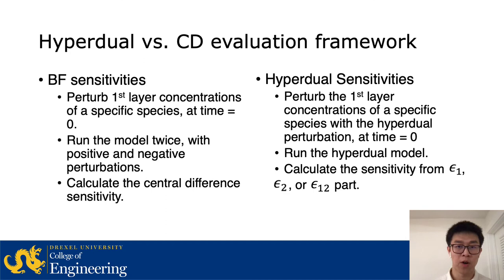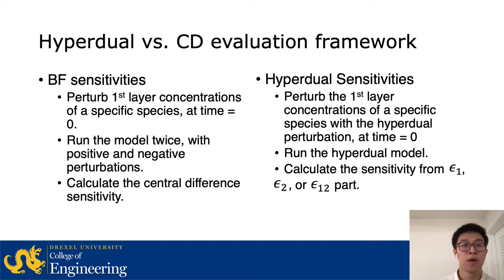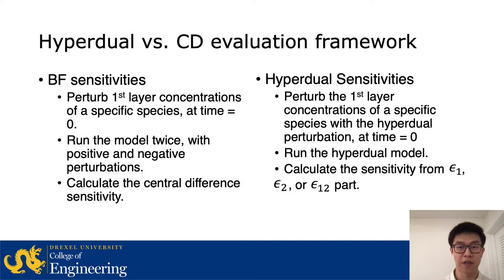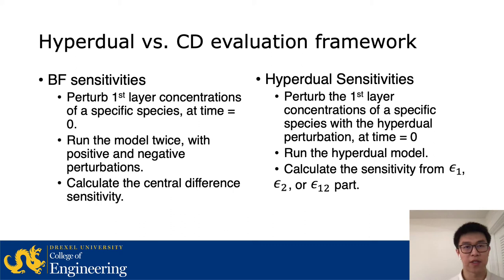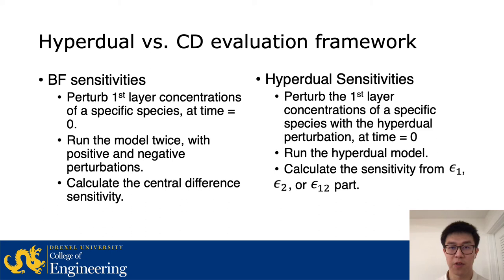We developed a framework for evaluating sensitivities calculated by the hyperdual model and by central difference of the real model. For the central difference case, we perturb the initial concentrations of a specific species at time zero, then run the model twice with positive and negative perturbations to calculate the central difference sensitivity. For second-order sensitivity, an extra unperturbed run is needed. For hyperdual sensitivities, we similarly perturb initial concentrations but with a hyperdual perturbation, and all sensitivity information appears in the ε₁, ε₂, or ε₁₂ parts of the output.